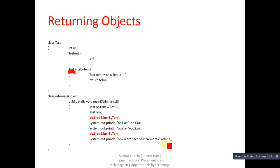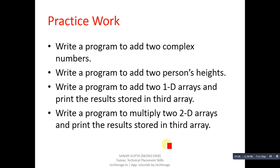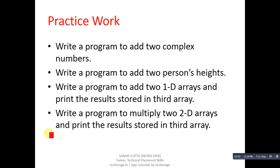With the help of these examples, you will understand how we can pass objects of a class in methods as arguments and also return objects from methods, with the returned objects received at the calling statement. Practice programs include: adding two complex numbers, adding two persons' heights in feet and inches, adding two 1D arrays, and adding two 2D arrays — implementing these using object passing and returning.